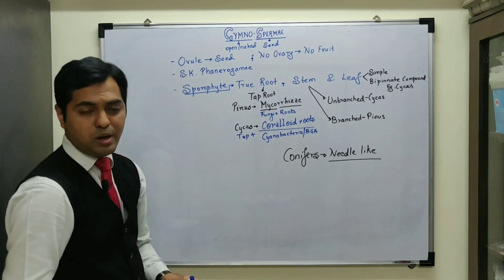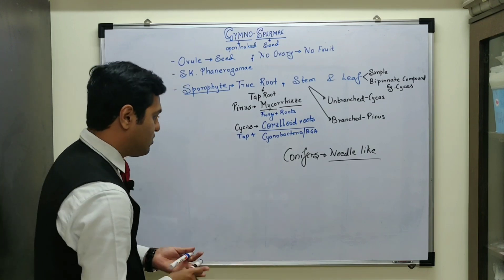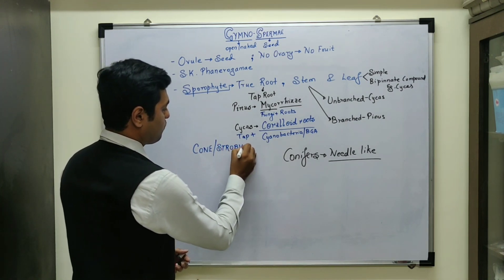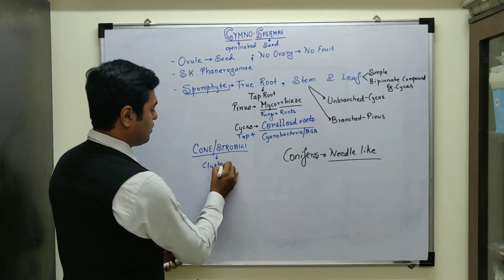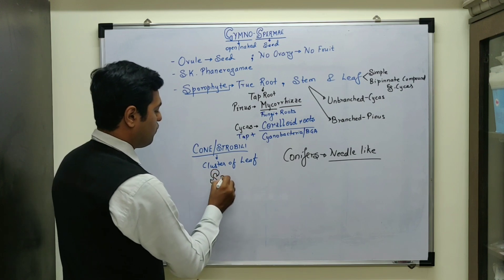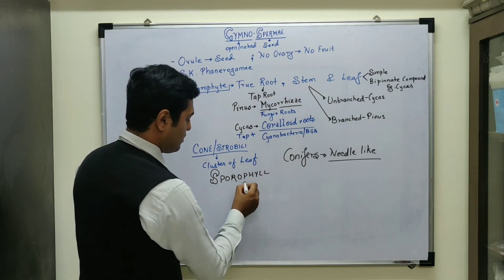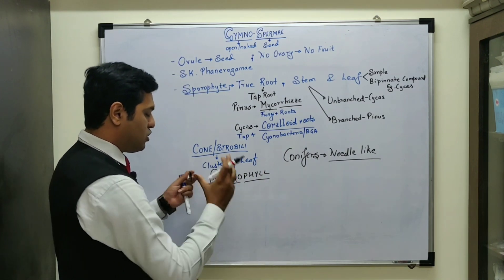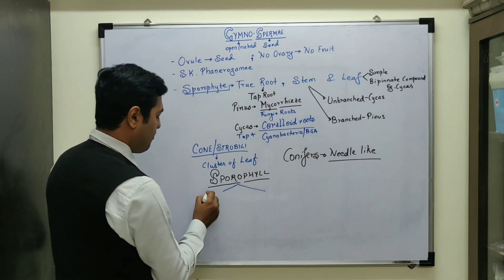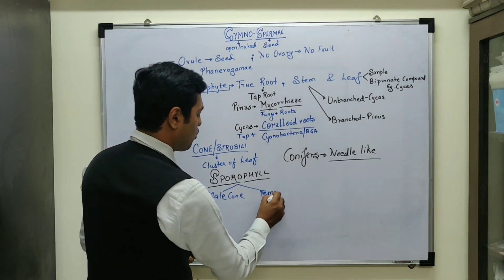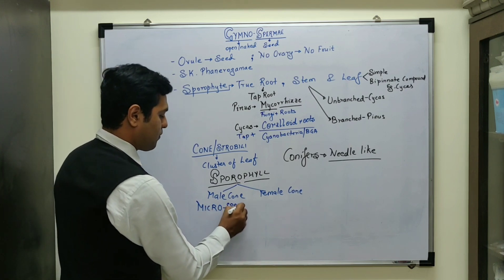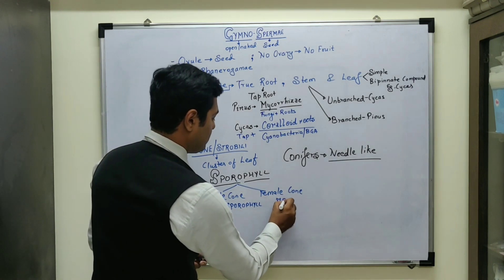Also in Gymnosperme, the leaves form an aggregate cluster known as a cone or strobili. This strobili is basically a cluster of leaves called sporophyll. The terminology sporophyll suggests it is a leaf that is going to produce spores. These sporophylls are present in clusters known as cones. Specifically in Gymnosperme there is a male cone and a female cone. The male cone is a cluster of leaves known as microsporophyll, whereas the female cone is considered a megasporophyll.